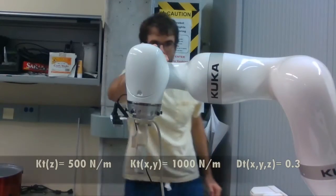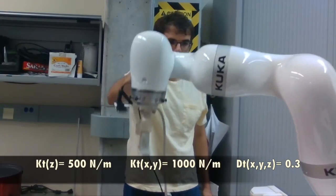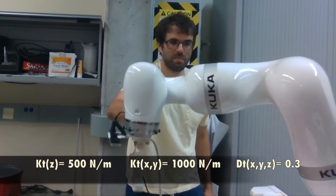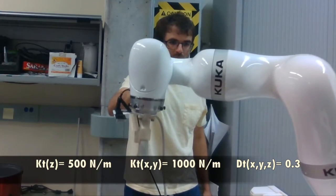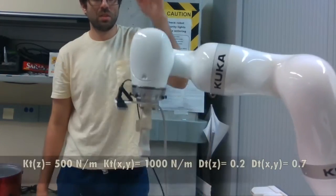As you can see, the desired stiffness and damping parameters can be set at runtime. For example, when low stiffness and low damping are set, the robot acts as an elastic spring.